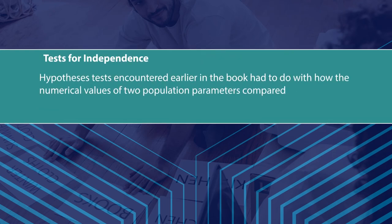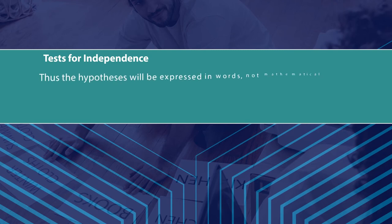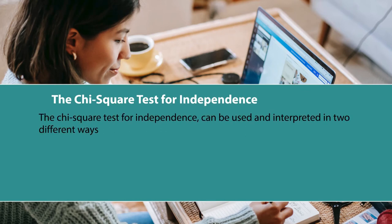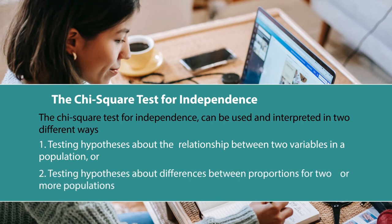Hypothesis tests encountered earlier deal with how numerical values of two population parameters compare. In this section, we investigate hypotheses about whether two random variables take their values independently or whether the values of one have a relation to the values of the other. The hypothesis will be expressed in words, not mathematical symbols. The Chi-square test for independence can be used in two ways: testing hypotheses about the relationship between two variables in a population, or testing hypotheses about differences between proportions for two or more populations.